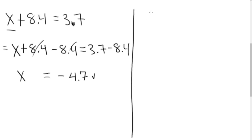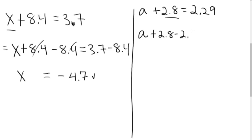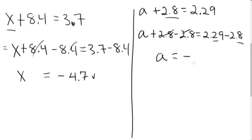Feel free to pause the video and try this example yourself: a plus 2.8 equals 2.29. If your thought process was to add the opposite, you subtract 2.8 from both sides: a plus 2.8 minus 2.8 minus 2.8. These two cancel, leaving a. On the right side, 2.8 is larger than 2.29, so I take the sign of the larger — which is negative — and the difference of the absolute values gives me 0.51. So a equals negative 0.51.